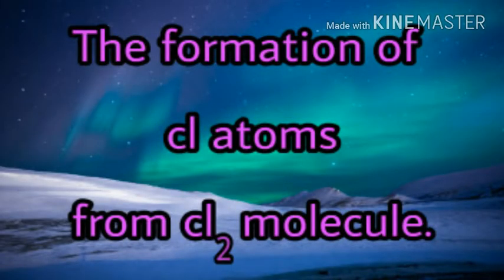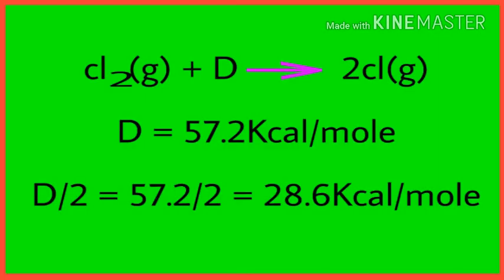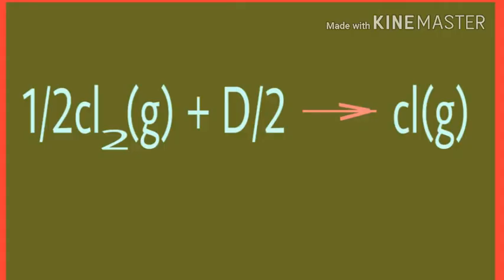The formation of chlorine atoms from chlorine molecule. To divide the chlorine molecule into chlorine atoms requires bond dissociation energy D. When the bond dissociation energy is applied to the chlorine molecule, it divides into two chlorine atoms. To form one mole of sodium chloride molecule, only one mole of chlorine atom is required. Hence only D/2 value is calculated. Cl2 gas plus D gives us 2 Cl gas. D is equal to 57.2 kcal per mole. D/2 is equal to 57.2/2, that is equal to 28.6 kcal per mole. Half Cl2 gas plus D/2 gives us Cl gas.